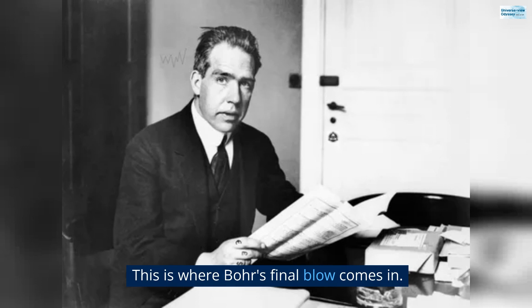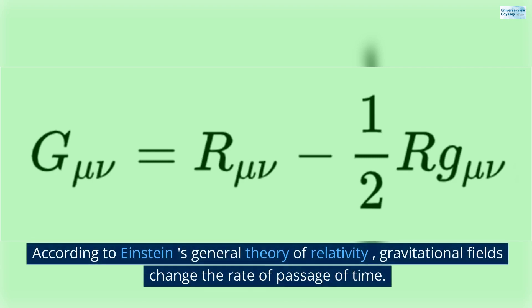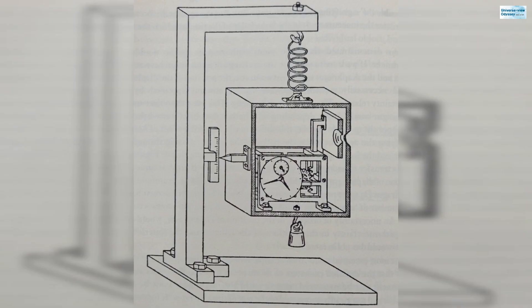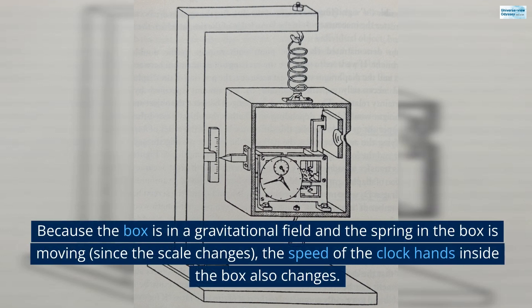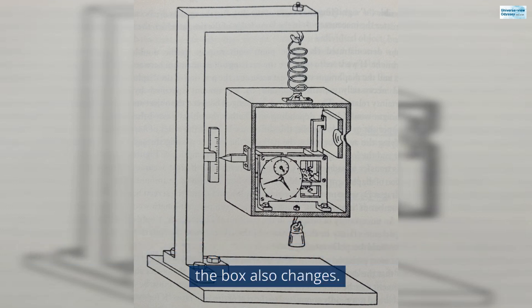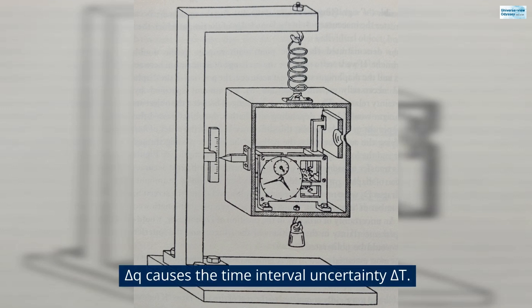According to Einstein's general theory of relativity, gravitational fields change the rate of passage of time. After the photons inside the box are emitted, the weight of the box is reduced. Because the box is in a gravitational field and the spring in the box is moving, since the scale changes, the speed of the clock hands inside the box also changes.